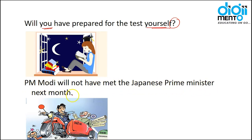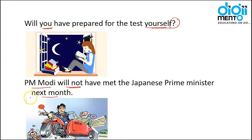'PM Modi will not have met the Japanese Prime Minister next month.' This is a negative sentence. The interrogative form: 'Will Prime Minister Modi have met the Japanese Prime Minister next month?'